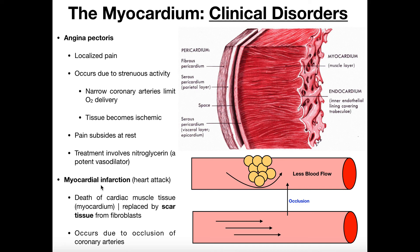With myocardial infarctions, you have death of the myocardium. With angina pectoris, the tissue does not die — it's simply becoming ischemic, and the pain is to tell you to stop doing whatever you're doing. If you're having a heart attack, you should also stop doing whatever you're doing, but myocardial infarction is a medical emergency.